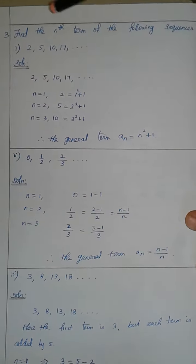We can take the sequence and the general formula. The sequence is 2, 5, 10, 17. Now, we can take n equal to 1. The first term is 2, which is 1 plus 1 equals 2. The second term is 5.